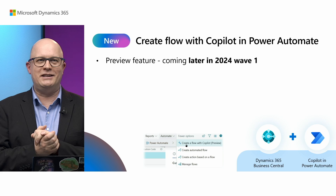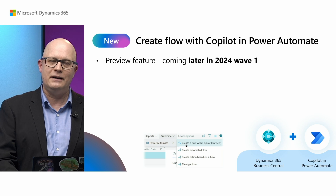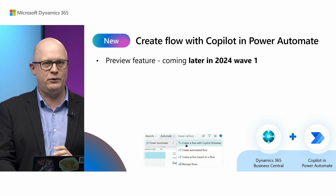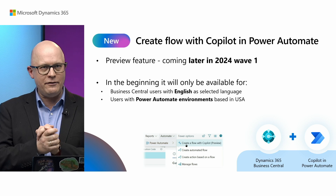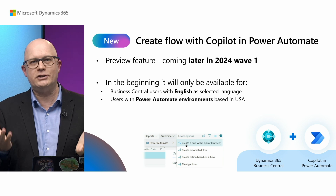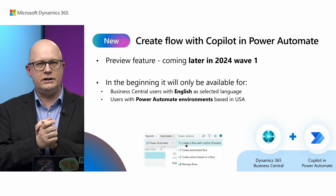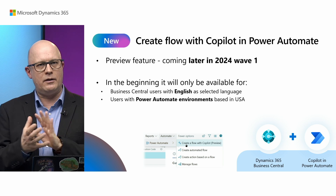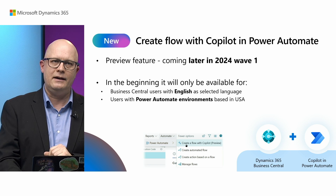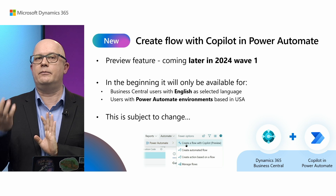We can't wait to see what you will build with this feature when it becomes available later in this wave. This feature is coming as a preview later in this wave, later in 2024. It will initially be available for Business Central set with English as a language and for Power Automate environments based in the USA. But later on, of course, this will change — we will be adding this feature and making it available in other regions as well.